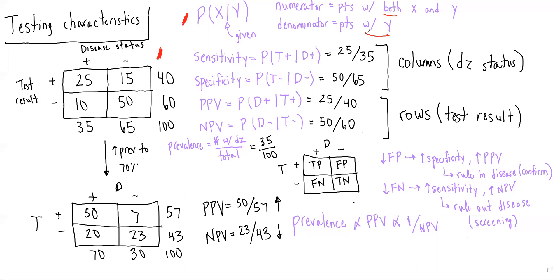The technical definition of sensitivity is that it is the probability of getting a positive test result given you have the disease. So looking at this table, it would be 25 over 35.